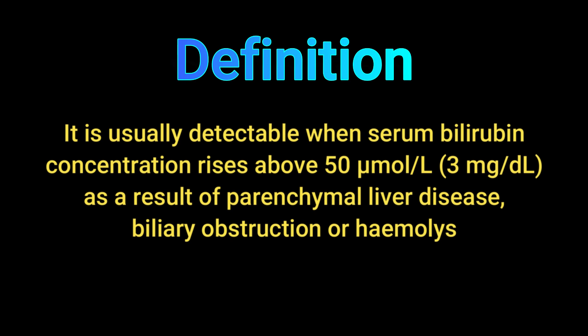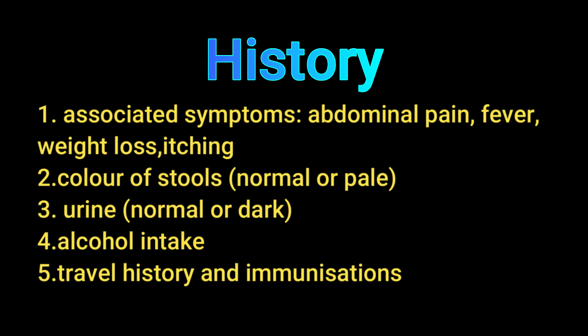Jaundice is usually detectable when serum bilirubin concentration rises above 50 micromoles per liter, that is 3 milligrams per deciliter, as a result of parenchymal liver disease, biliary obstruction, or hemolysis.